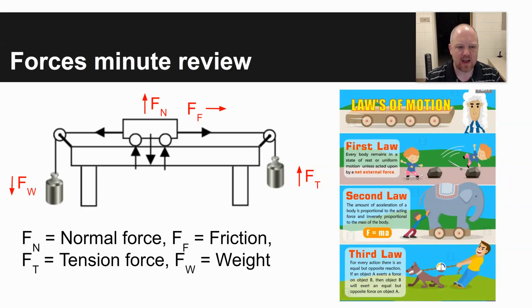F sub N is a normal force which is perpendicular to a surface that pushes up on an object. F sub F is a force of friction, sometimes shown as F sub S like static friction or K for kinetic friction, gripping or slipping friction. And then F sub T is a force of tension, which is a force that acts on a rope or a string or a cord.